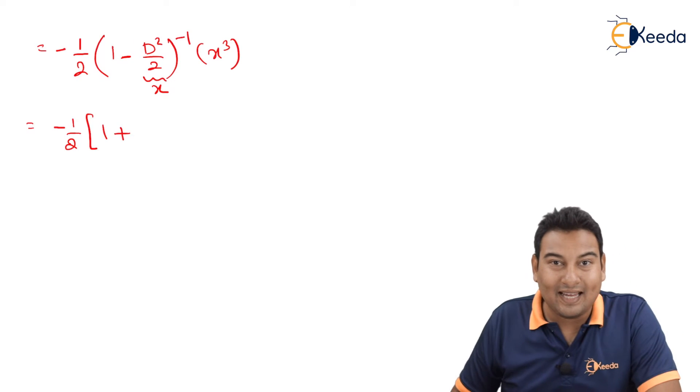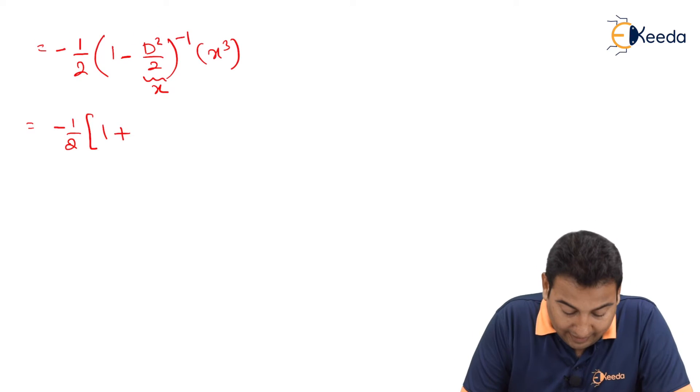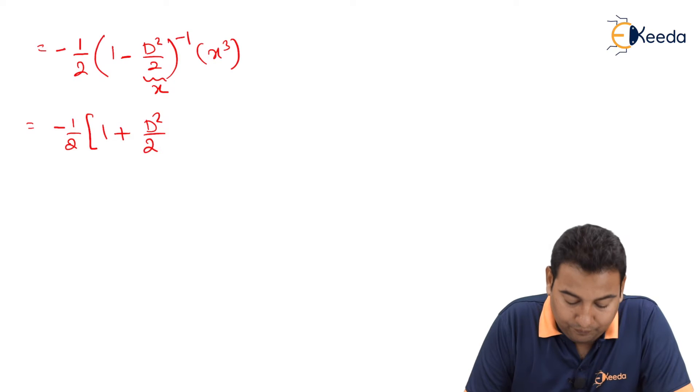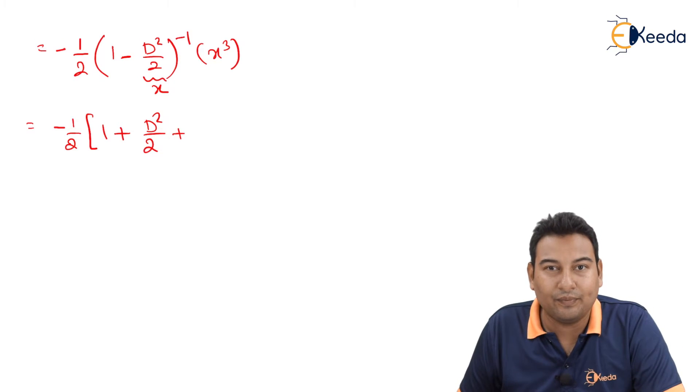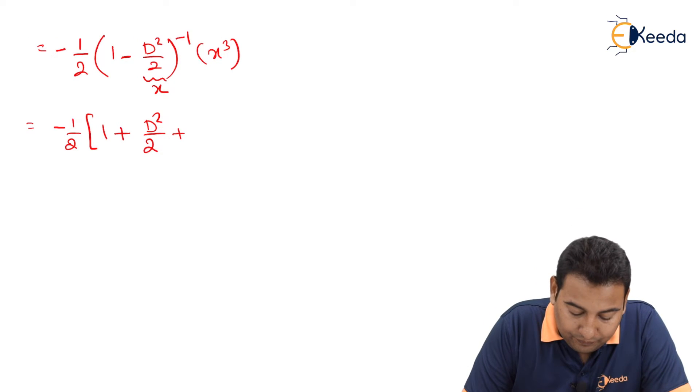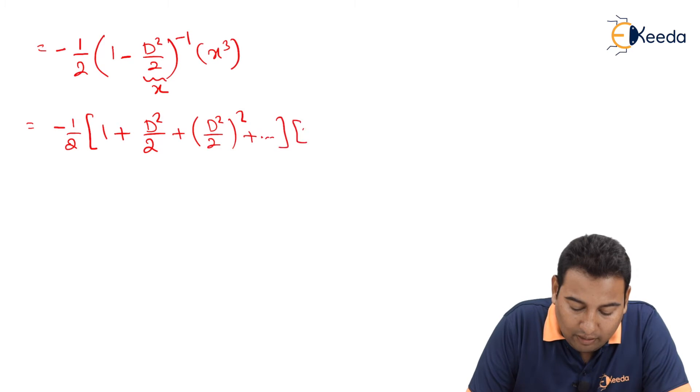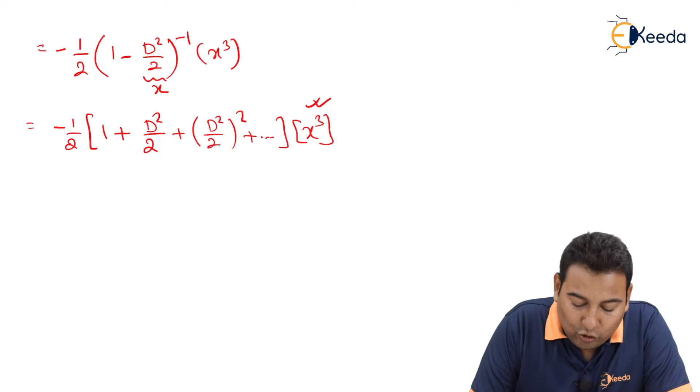Everything is plus. 1 plus x, here x is D²/2, plus x², that means (D²/2)² plus dot dot dot. Don't go ahead because here it is x cube.